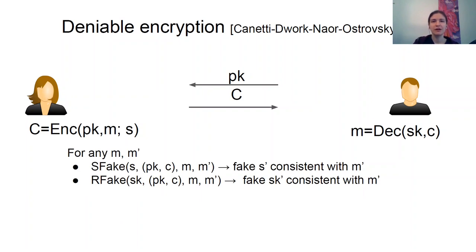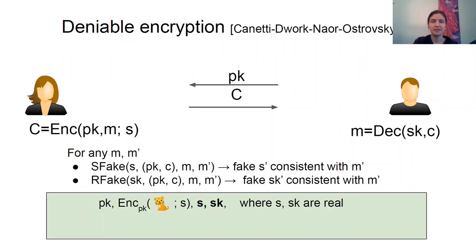More concretely, deniable encryption comes with two additional algorithms called sender fake and receiver fake. The sender fake algorithm takes as input everything the sender knows: its true random coins S, the communication transcript, the true plaintext, and the desired fake plaintext M'. This algorithm outputs fake sender coins S' which are consistent with a given transcript, no matter what it really encrypted. Similarly, receiver fake produces fake coins of the receiver consistent with a given target fake plaintext M'. The security requirement roughly says that the adversary cannot tell whether it sees true keys or fake keys.